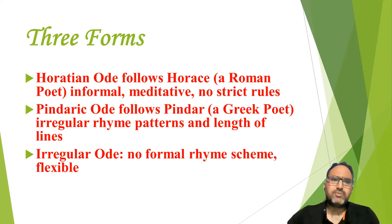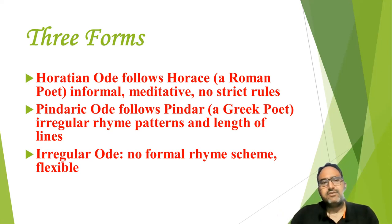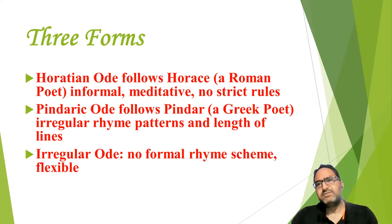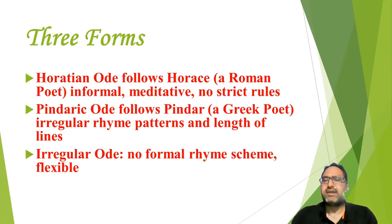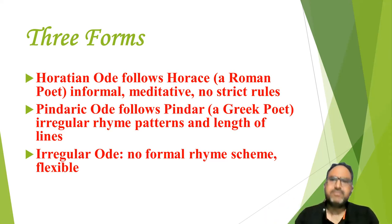The third important form is the Irregular Ode. In an irregular Ode there is no formal rhyme scheme, and these are very flexible — a lot of freedom is given to the poet. A lot of experimentation is done by poets who write irregular Odes. John Keats usually wrote irregular Odes.